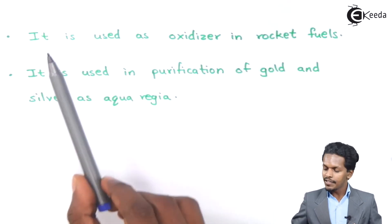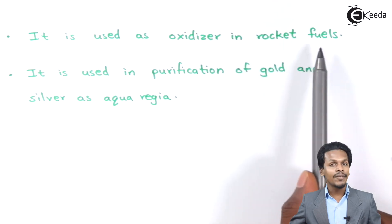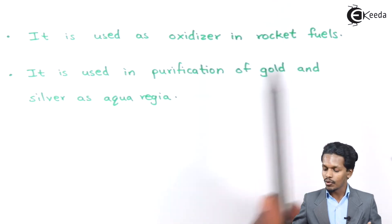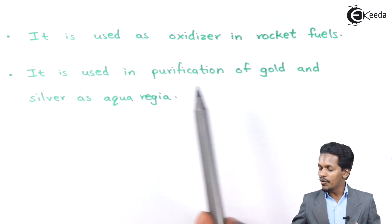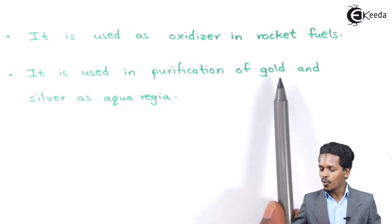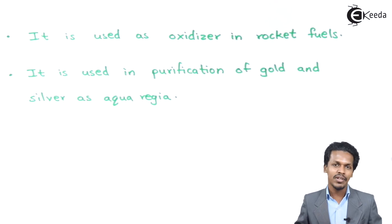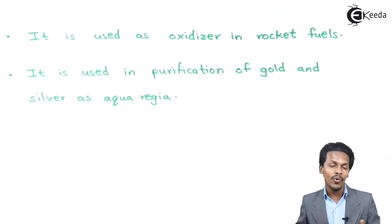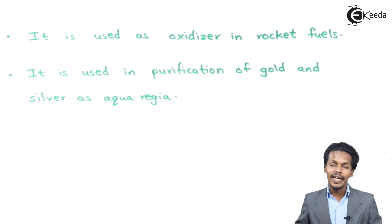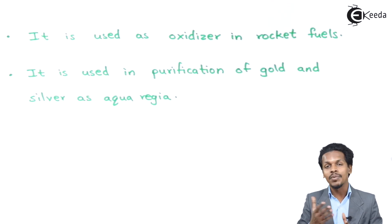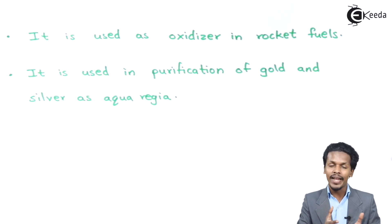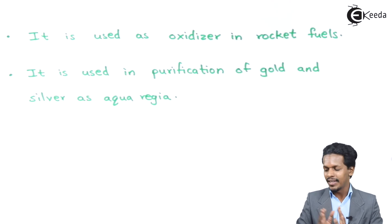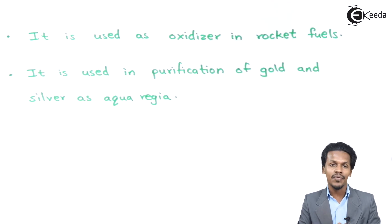Nitric acid is also used as an oxidizer in rocket fuels. Additionally, it is used in the purification of gold and silver as aqua regia. In a previous lecture we discussed how aqua regia is obtained and how it is very reactive toward noble metals like gold and platinum.